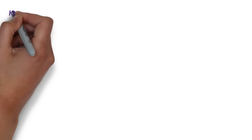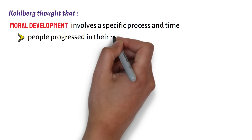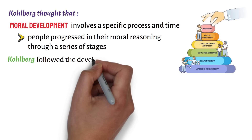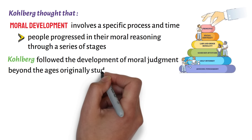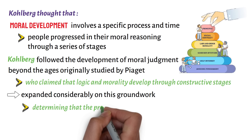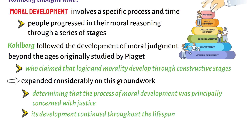Kohlberg thought that moral development involves a specific process and time, and that people progressed in their moral reasoning through a series of stages. It is important to note that Kohlberg followed the development of moral judgment beyond the ages originally studied by Piaget, who claimed that logic and morality develop through constructive stages. Kohlberg expanded considerably on this groundwork, determining that the process of moral development was principally concerned with justice, and that its development continued throughout the lifespan.